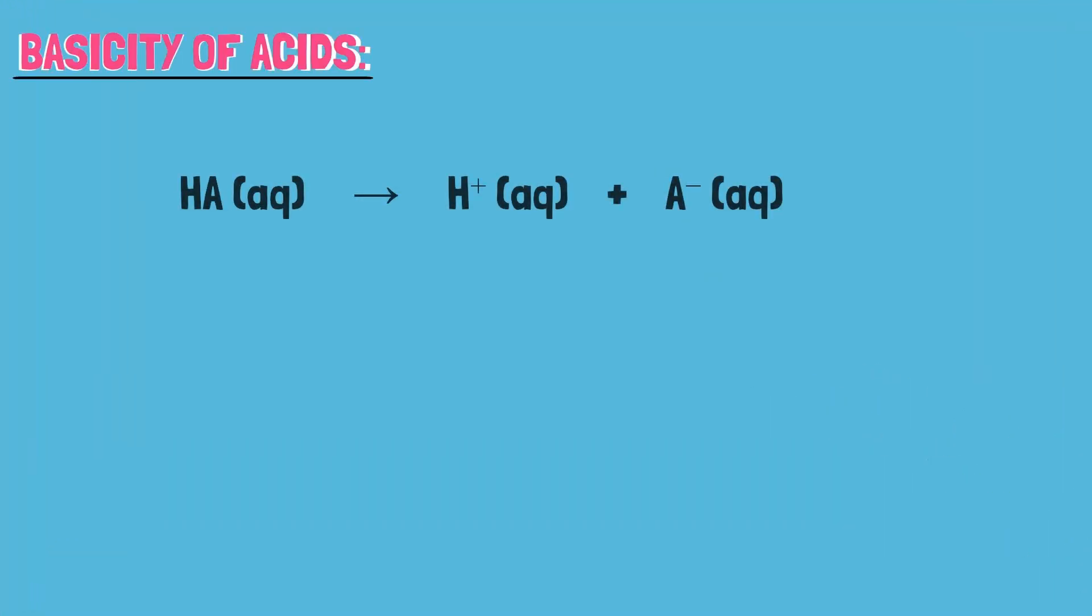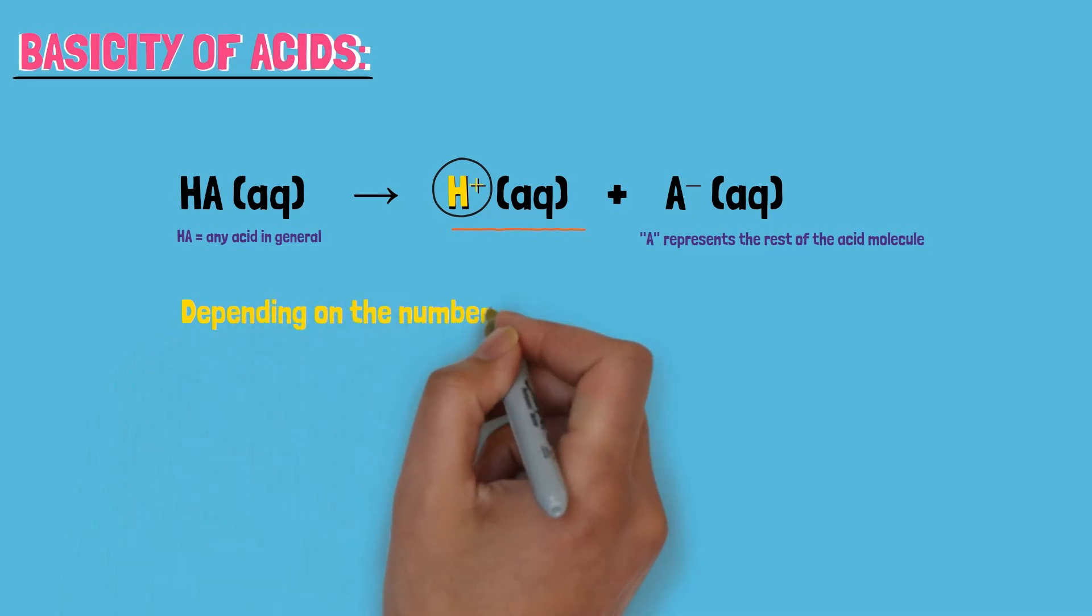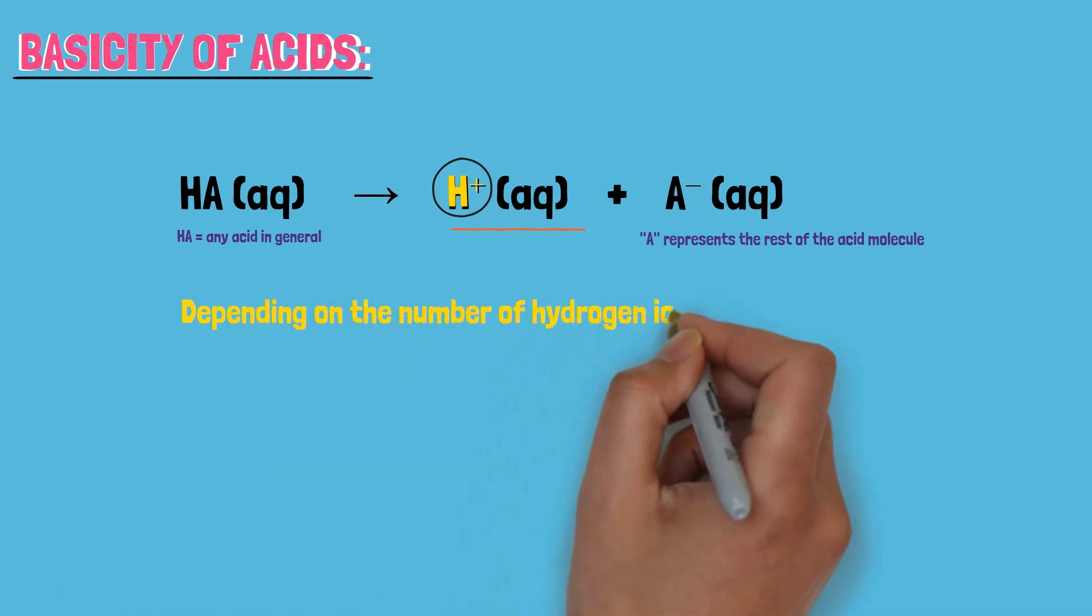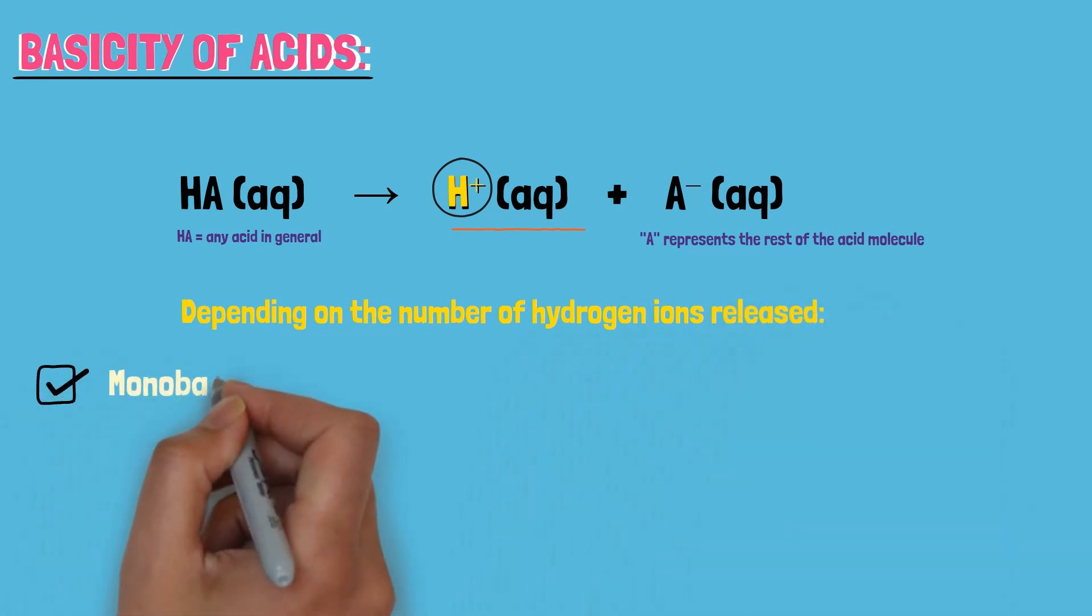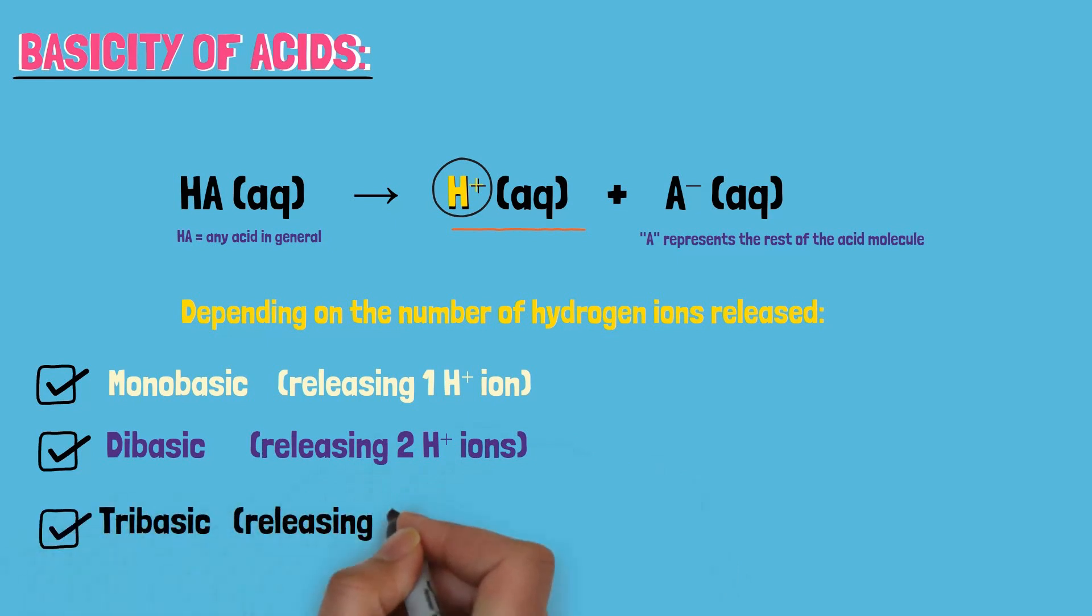Dear students, we know that acids release H-positive ions in their aqueous solution. But different acids release different number of hydrogen ions. Depending on the number of hydrogen ions released, we categorize them as monobasic, releasing one H-positive ion, dibasic, releasing two H-positive ions, and tribasic, releasing three H-positive ions.